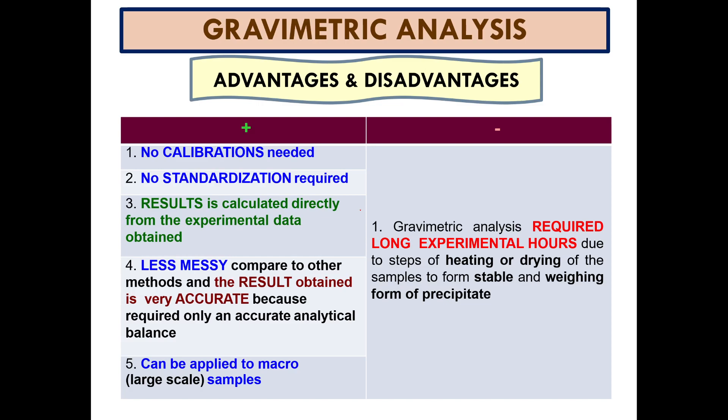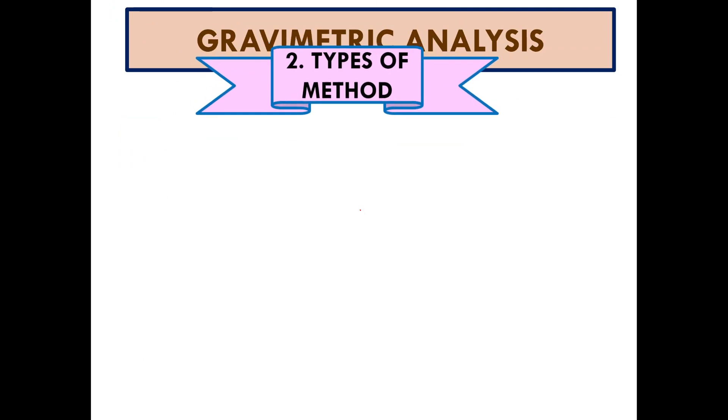Gravimetry analysis can also be applied to a macro or large-scale sample. The disadvantage of gravimetry analysis is that it requires long experimental hours due to the steps of heating or drying — sometimes you need to heat or dry the sample precipitate inside an oven. You may need to use the oven for 24 hours at a temperature that is not very high, to avoid the precipitate being vaporized or becoming unstable.